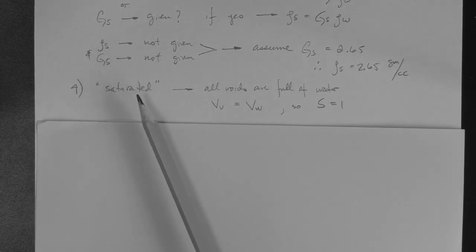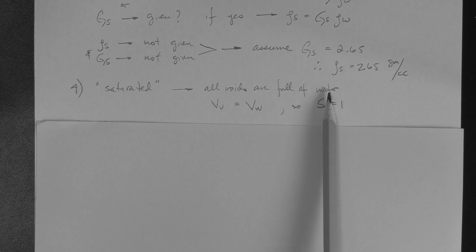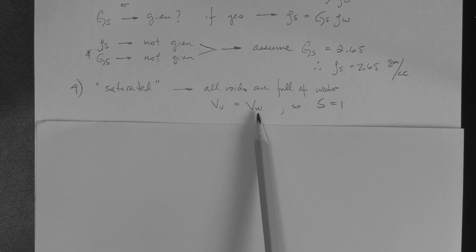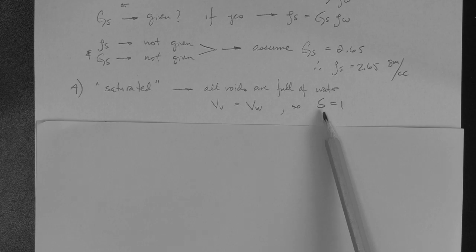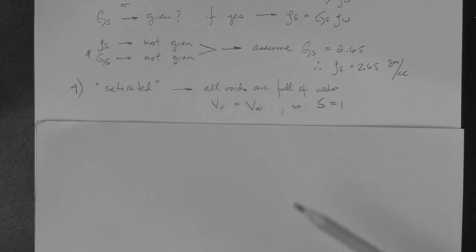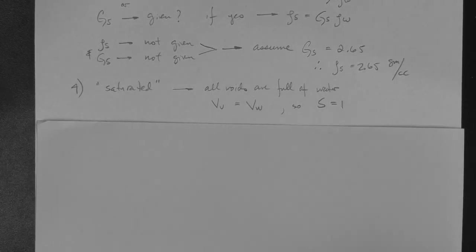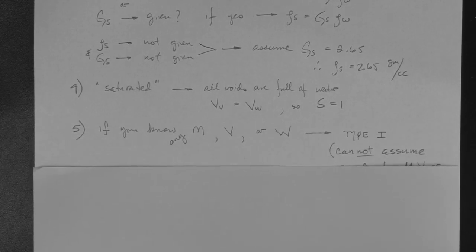Number four, if the soil is said to be saturated, it means that all the voids are full of water. Therefore, the volume of voids is the volume of water, or vice versa. And this means that the degree of saturation is 1, or 100%. But remember that for calculations, you are always going to use decimals. Then at the end of the problem, you may want to express your answer, let's say for a water content, in percentage. But you're always going to perform calculations with the decimal versions of your values.